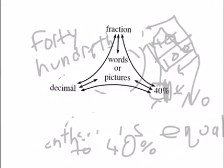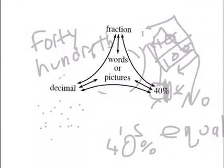But it says words or pictures, so if you want to do pictures, which is kind of easy, you can do this. I put 40 hundredths or four tenths, so the easiest one would be four tenths.